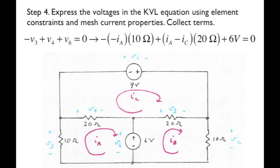What about the voltage V4? V4 is equal to 20 ohms times the quantity I sub A minus I sub C. That's using Ohm's law and the property of mesh currents. V sub 6 is seen to be, by inspection, 6 volts. The element constraint for the voltage source is, my voltage is 6 volts.